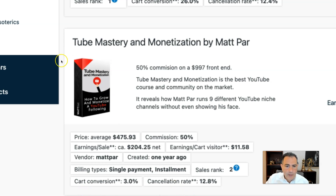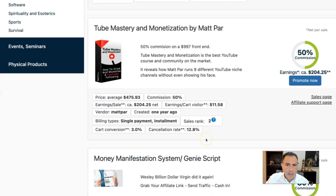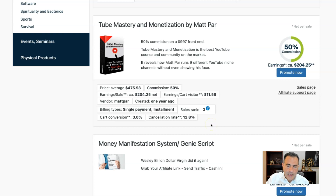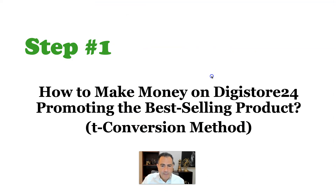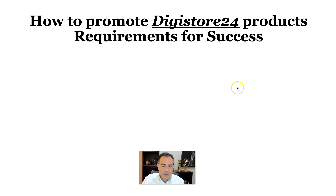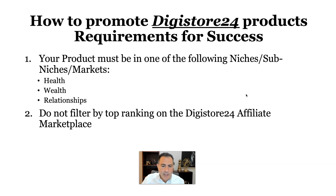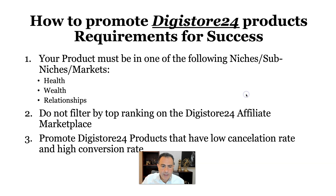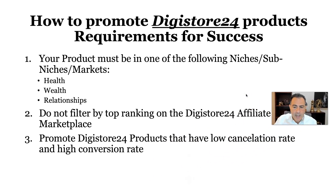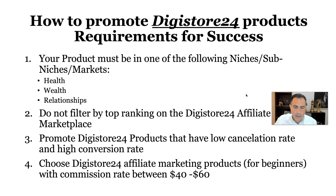So here are the requirements for success when promoting Digistore24 products: first, your product must be in one of the following niches — health, wealth, or relationships. Second, do not filter by top ranking on the Digistore24 affiliate marketplace. Third, promote products that have a low cancellation rate and high conversion rate. Fourth, choose products for beginners with a commission rate between 40% and 60%.